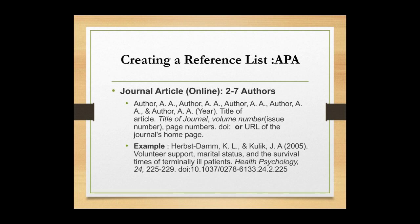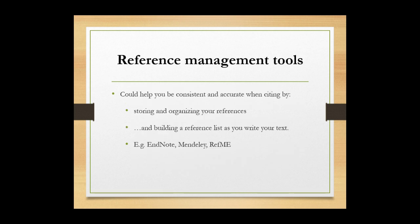For an online journal with two to seven authors, put the list of all authors, followed by the year of publication, the title of the article, the title of the journal, the volume number, page numbers, and the URL of the journal homepage.